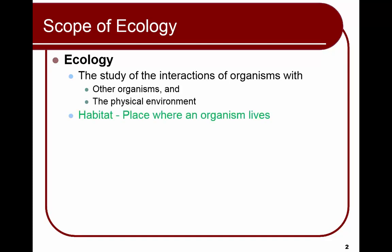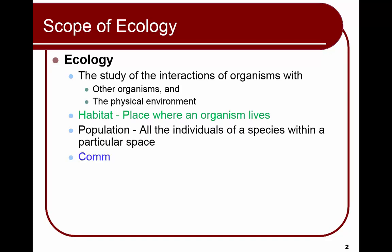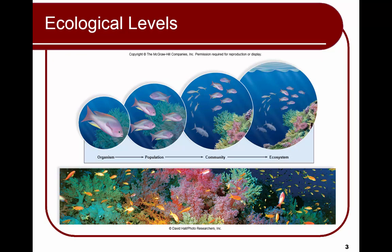When we talk about habitat, we're talking about their address — where they live. Then we have the levels of organization: the organism is a member of a species, which is a group of individuals that can interbreed and produce fertile offspring. All the members of a species make a population — all members that live in an area. A community is all the different populations in an area. An ecosystem is the community interacting with the external environment. And the biosphere is the part of Earth that supports life.